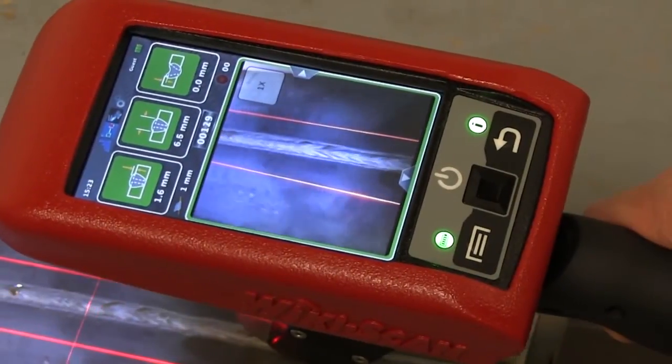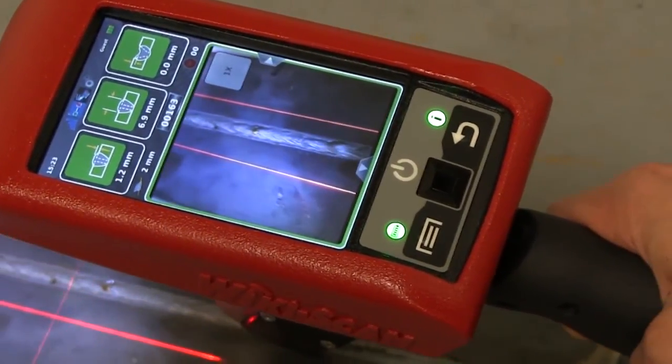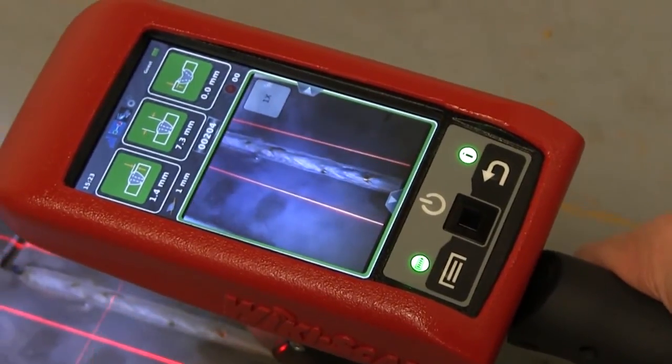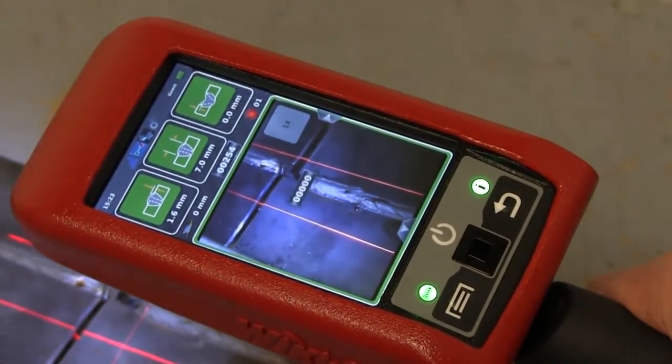Moreover, the Wikiscan provides real-time travel speed feedback which alerts you if you are moving the Wikiscan too fast to identify a specific size defect.